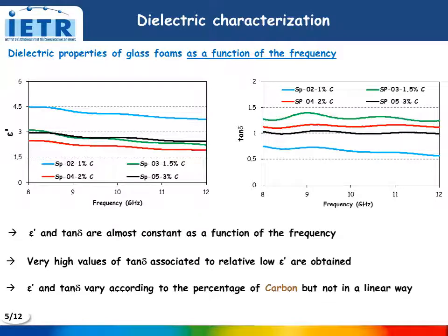For the dielectric properties, we can note that very high values of dielectric losses are obtained for these samples and are associated to relatively low permittivity. However, these dielectric properties vary according to the percentage of carbon but not in a linear way.